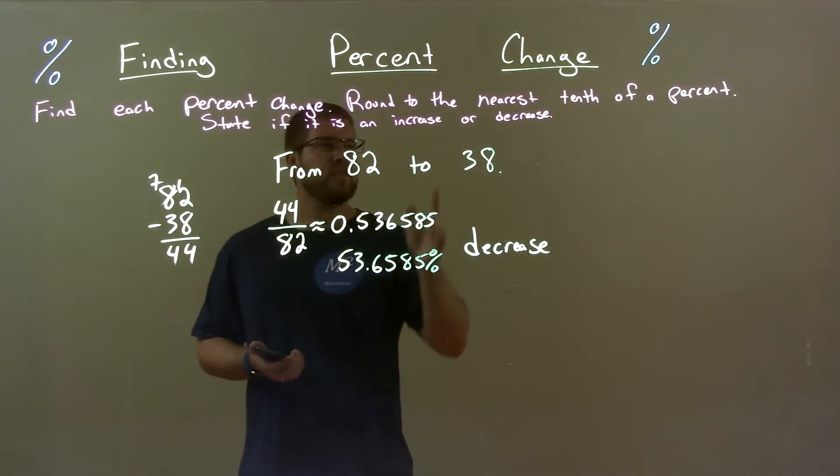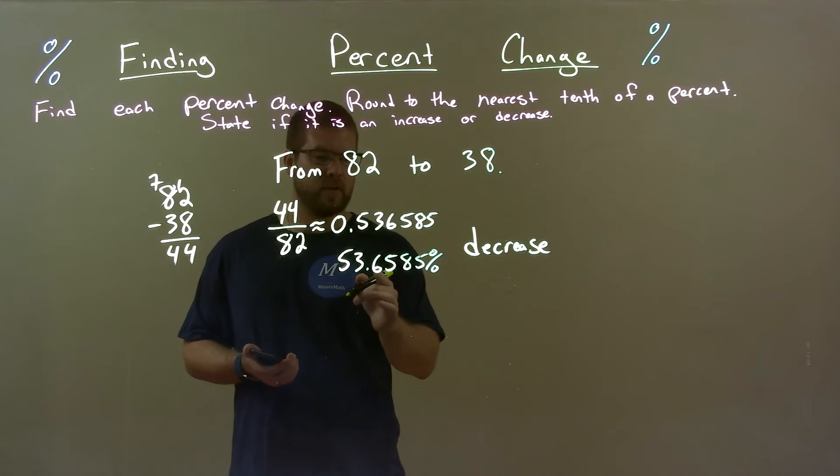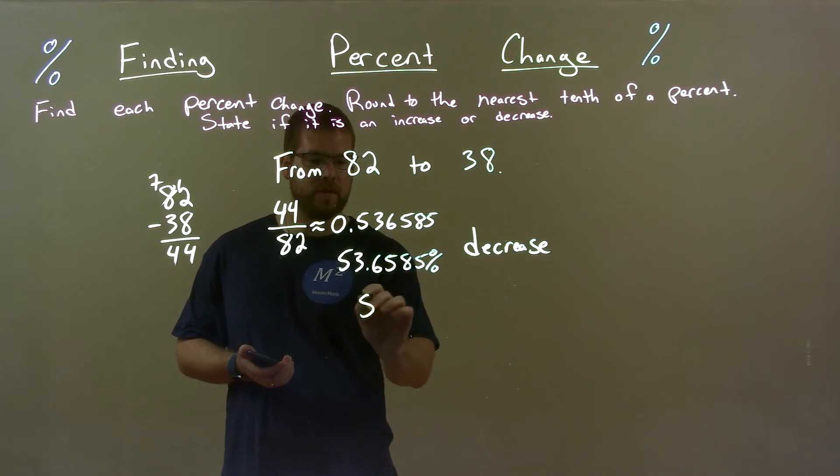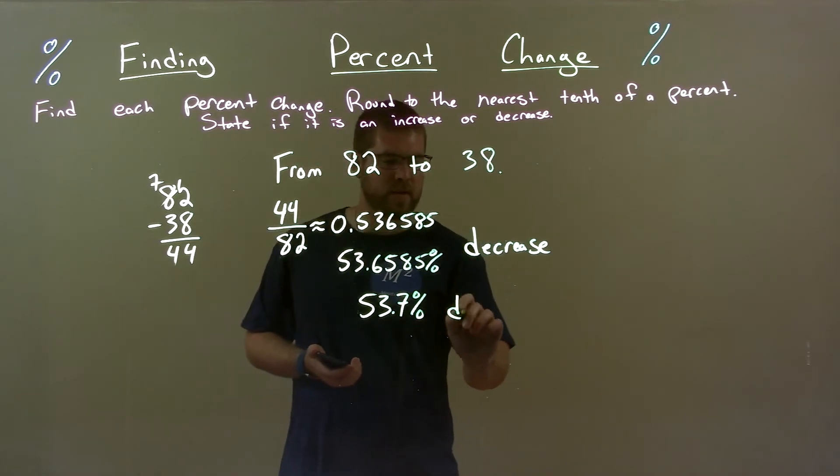Then they also say round to the nearest tenth. So we look at a tenth of a percent. That's six right there is the tenth place. Five makes it round up. So we have 53.7%. Round the six up to seven. And then that's a decrease like we said.